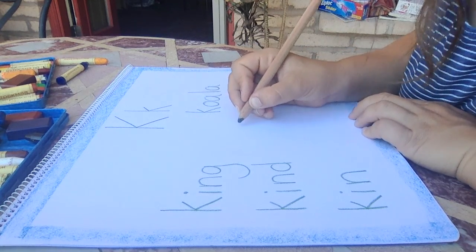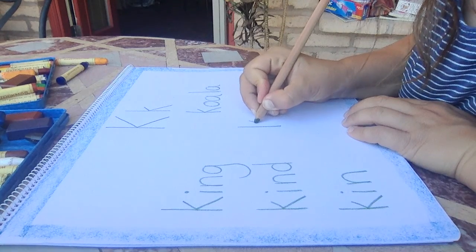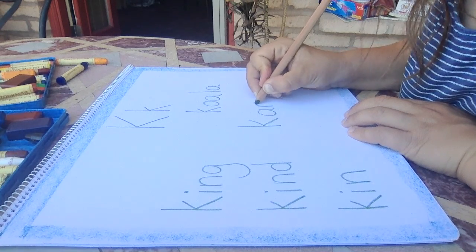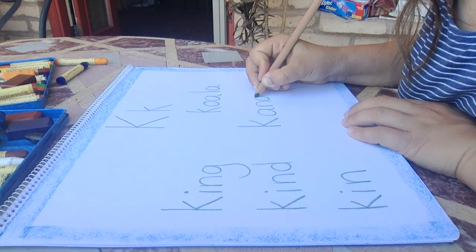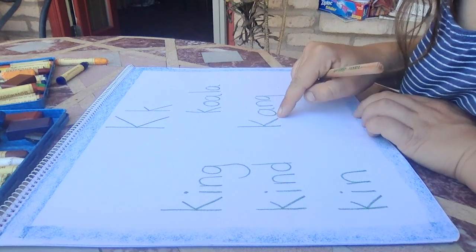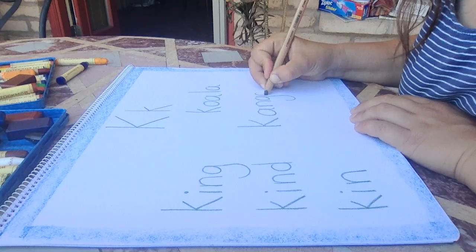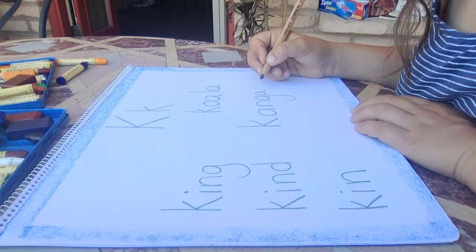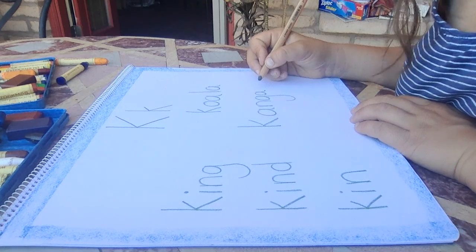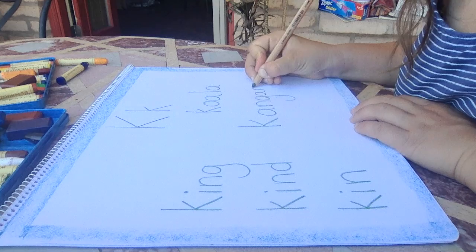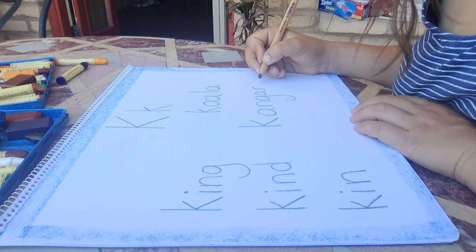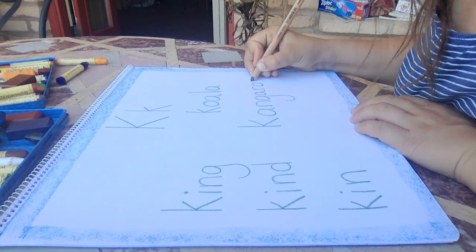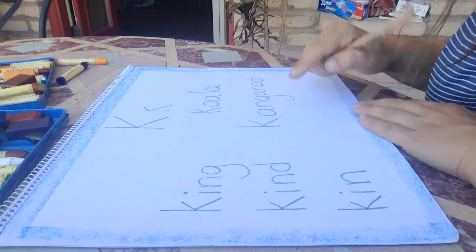Kangaroo is the other animal I was thinking of. K, AH, MM — K-K-KANG. AH, RR — do you remember what makes an RR sound? RR, rabbit. Kangaroo — that's an R, and then OOO. Now OOO could be a few different letters, but one way we write OOO is with two O's. Kangaroo.